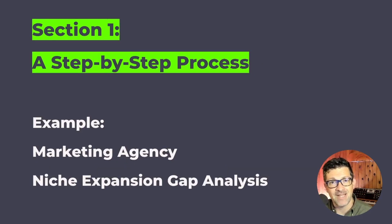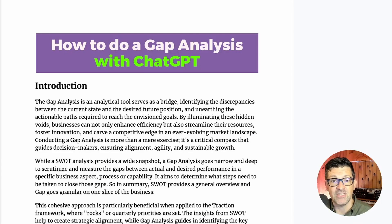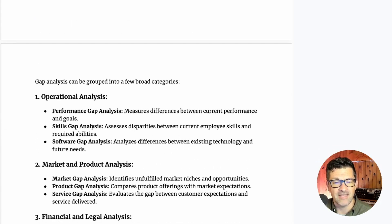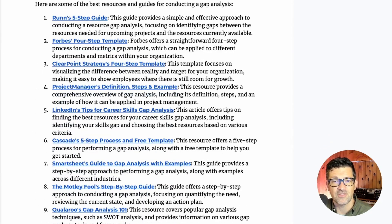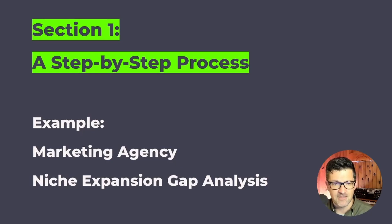Now I want to jump into a step-by-step process. The example we're going to use today is a marketing agency doing a gap analysis for niche expansion — looking for other places they may be able to find opportunities. I have a cheat sheet version of all of this available on my Patreon, which includes all the prompts we'll go through as well as additional resources and guides. But let's jump into this step-by-step process.